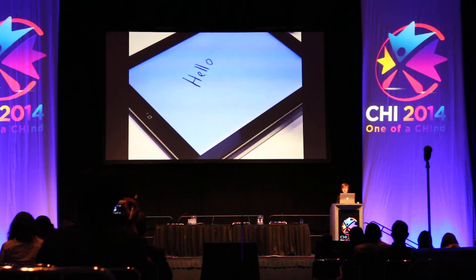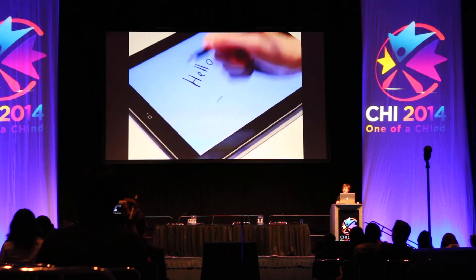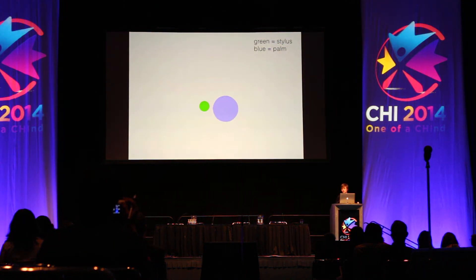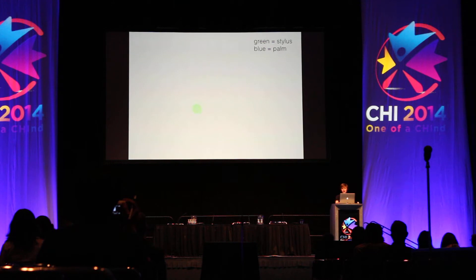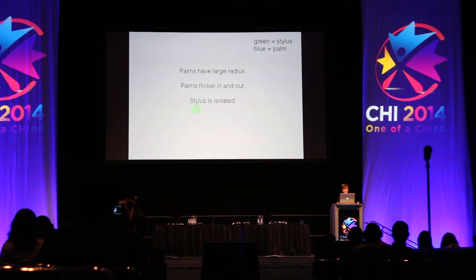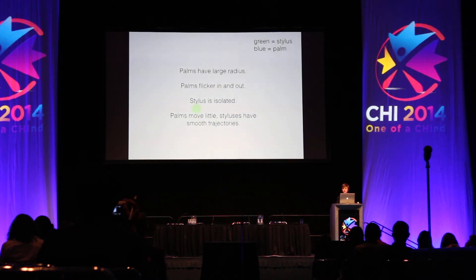To explain how this works, let's look at what the touchscreen sees as I write 'hello.' Here's a recording of the actual touch events — palm touches labeled blue, and the stylus labeled green. A couple things pop out: palms tend to have a fairly large touch radius, they flicker in and out while the stylus appears consistently, and palms tend to be clustered together because the touch driver breaks them into smaller touches, while the stylus tends to be more isolated with longer, smoother trajectories.